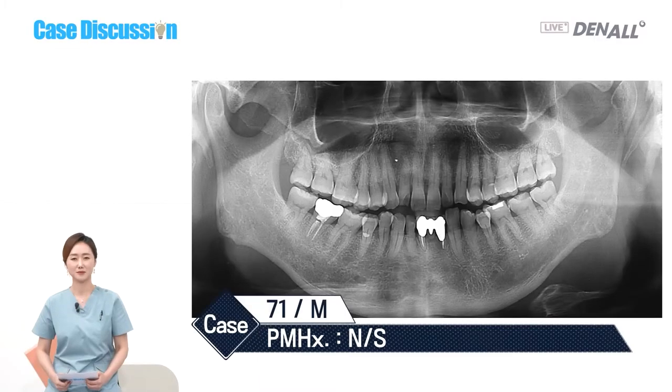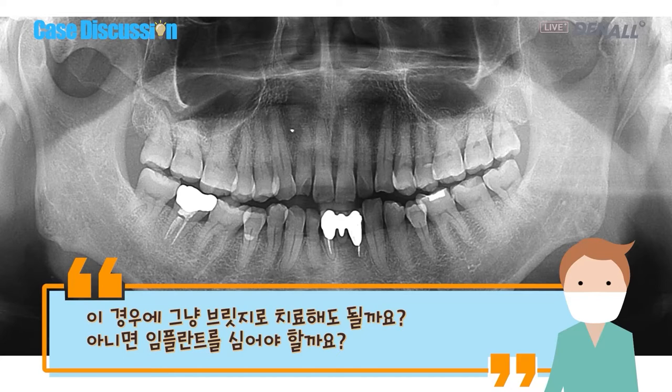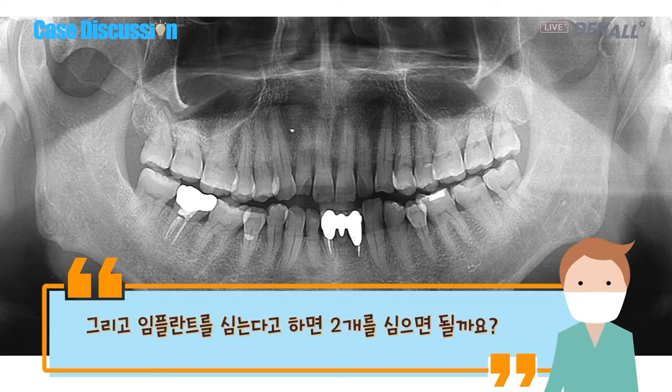On the dental side, viewers can ask questions or share comments using the chatting window. Let's look at the case presented to us. The patient is a 71-year-old male, no specific disease. The chief complaint is mobile lower anteriors and pain in the gum. Should I treat it with a bridge or implants? If implants, do I need to place two? That's the question we received.